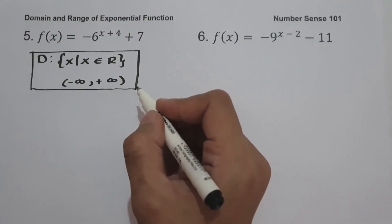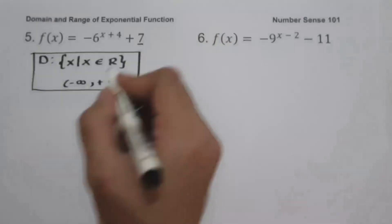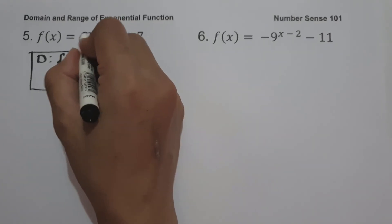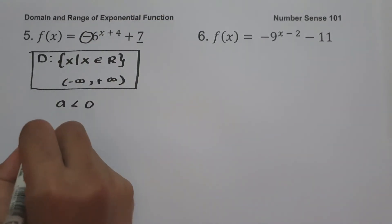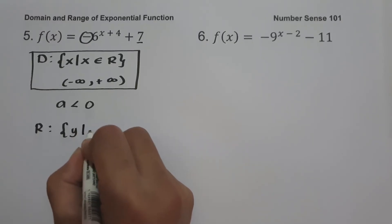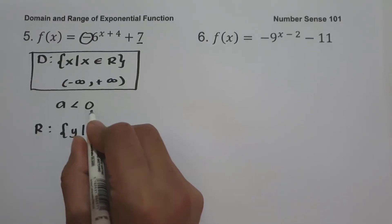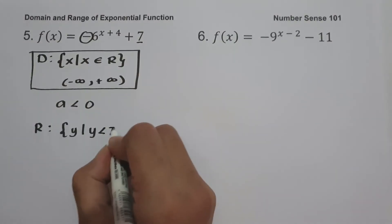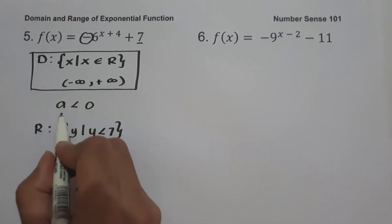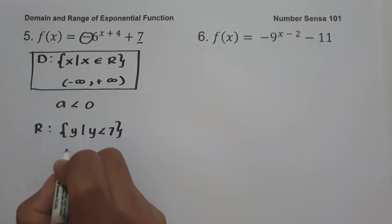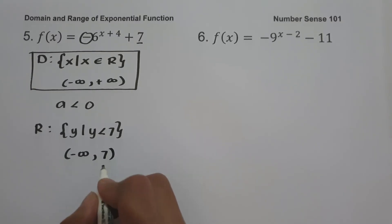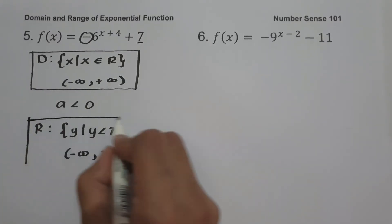Since our horizontal asymptote is 7 and the value of a is less than 0 because we have a negative sign, our range is the set of y values such that y is less than d, which is 7. In interval notation, from negative infinity up to 7, where 7 is not included.